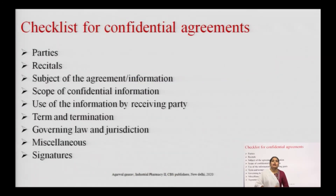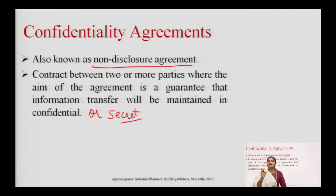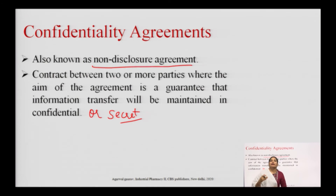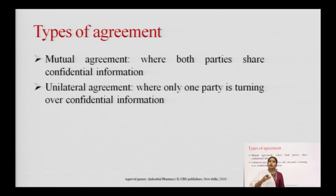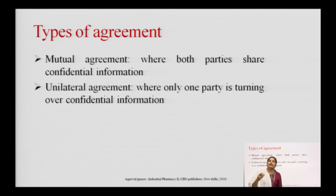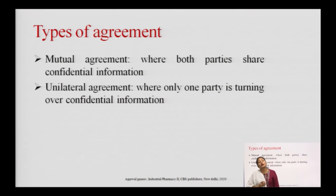Revision of the confidential agreement: a confidential agreement is also known as a non-disclosure agreement and is the contract between two or more parties where the aim is to guarantee that information transferred will be maintained as confidential or secret. As mentioned in the previous lecture, technology is developed and transferred among different countries, different firms within the same country, from government sector to private sector, and from academics to the private sector. This agreement can be a mutual agreement — where both parties share confidential information — or a unilateral agreement — where only one party turns over the confidential information.